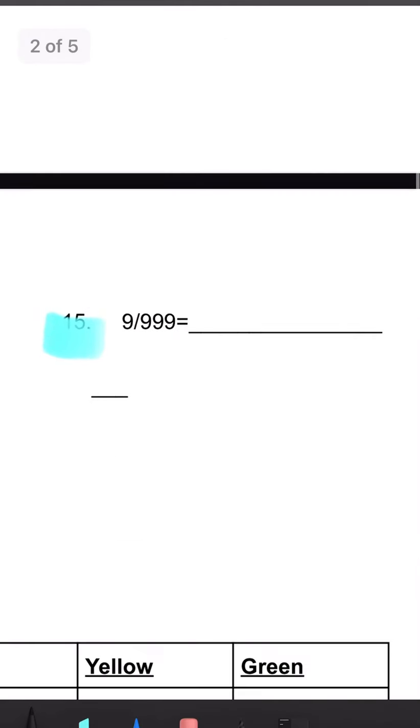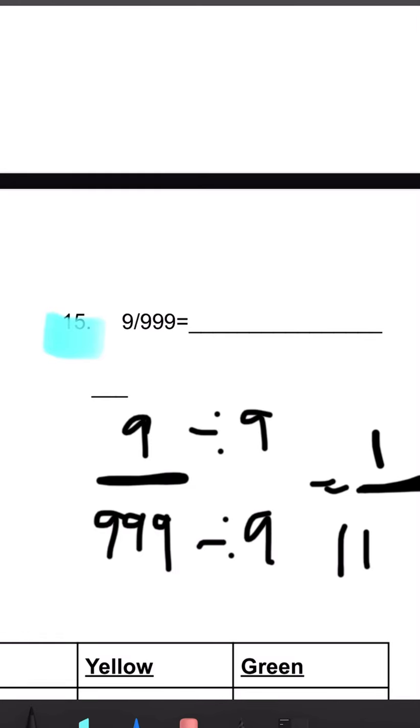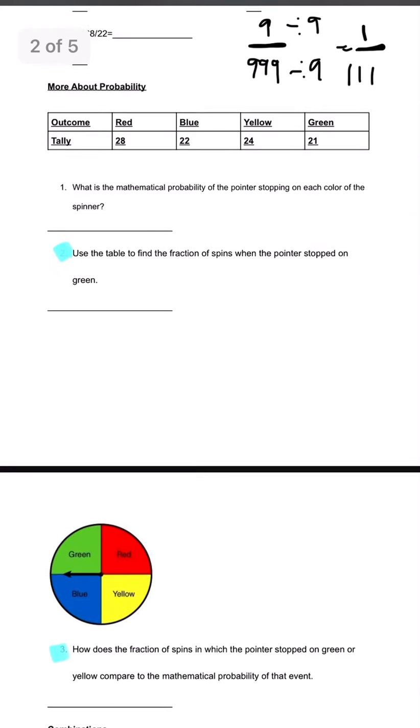Number 15, we have 9 over 999. Divide top and bottom by 9 and we get 1 over 111. All right. Let's take a look at more about probability.